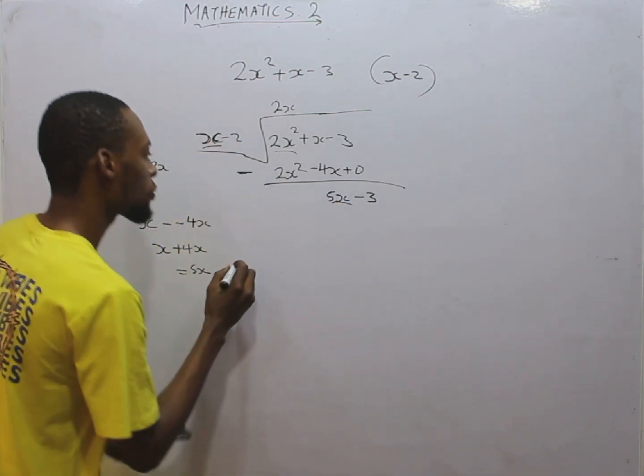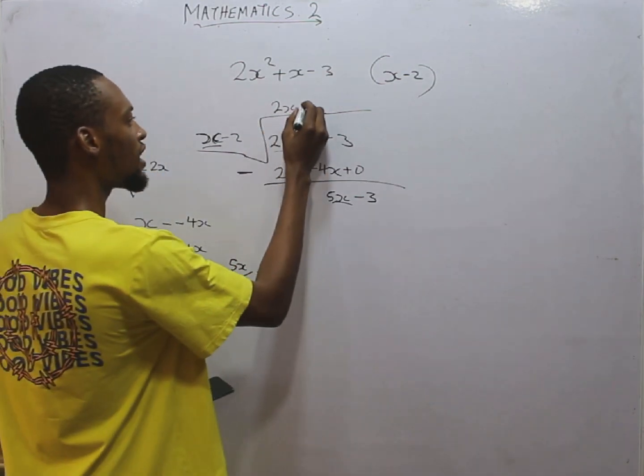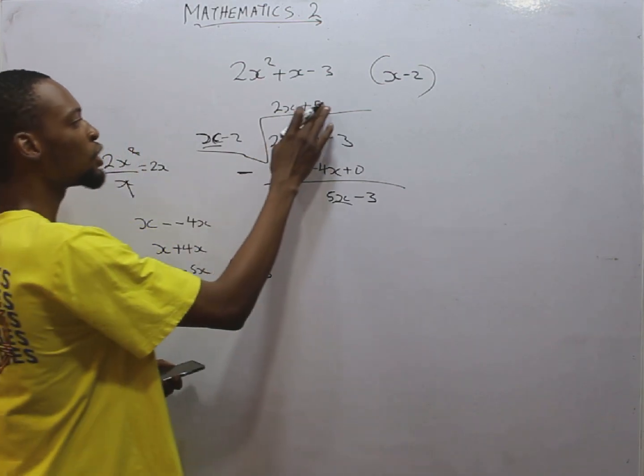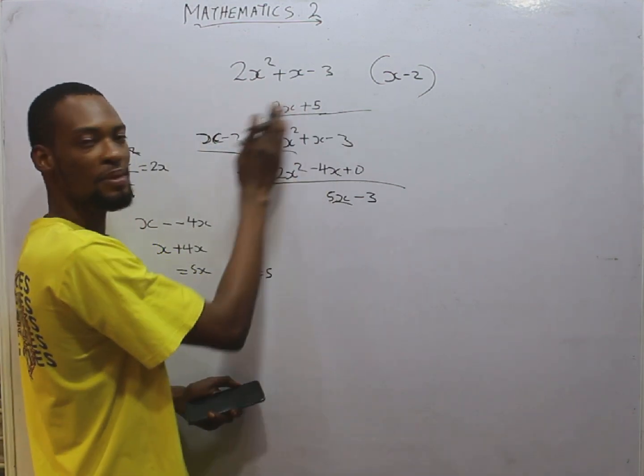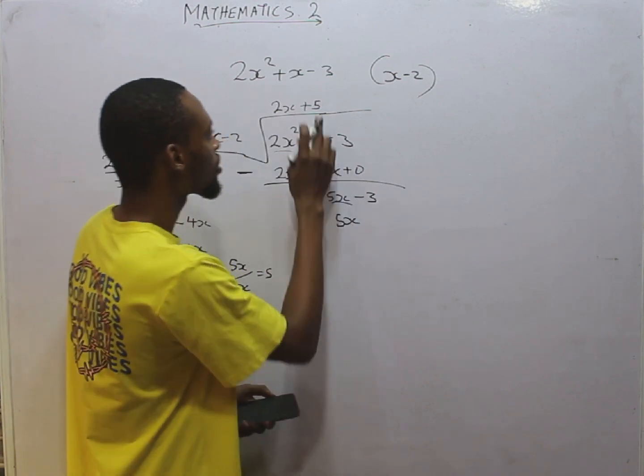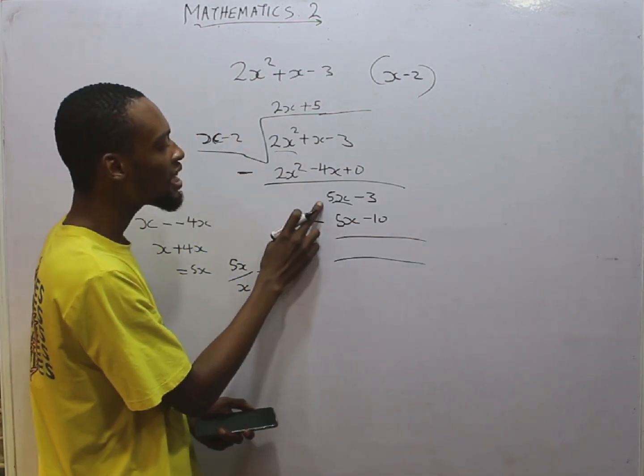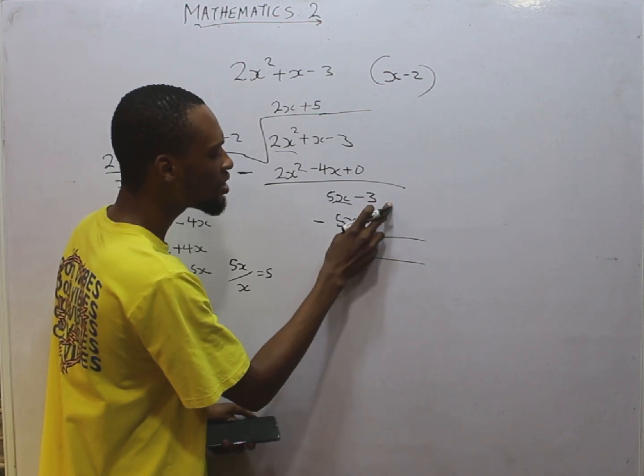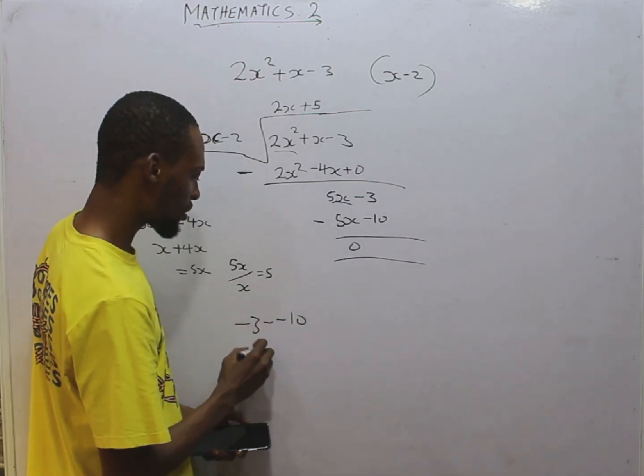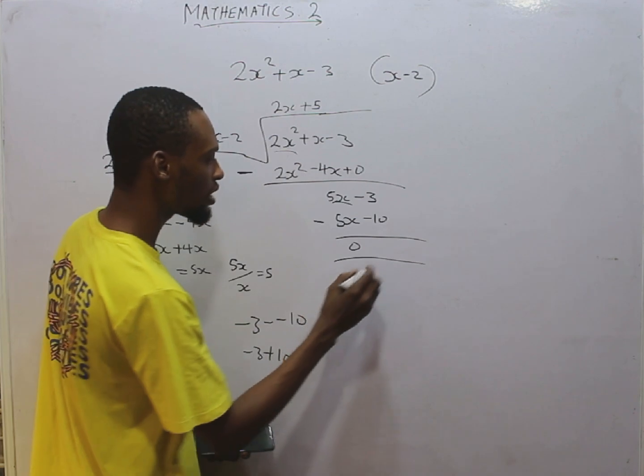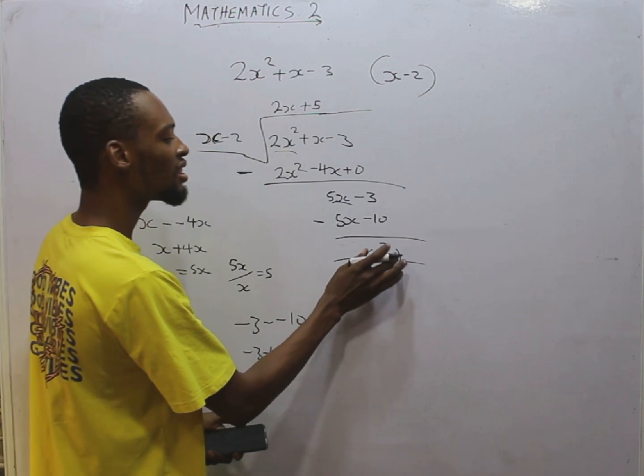Since the degrees are still the same, there is S here, there is S here, we continue the same step. What is the step? This divided by this. So 5S over S equals 5. So plus 5. Same step, use plus 5 to multiply everything here and put the answer on that. To have 5 times S, 5S. 5 times minus 2, minus 10. So cross. 5S minus 5S is 0. Minus 3 minus minus 10, this is minus 3 plus 10, and that is plus 7. So this is 0. So we have a constant value here. This is the remainder.